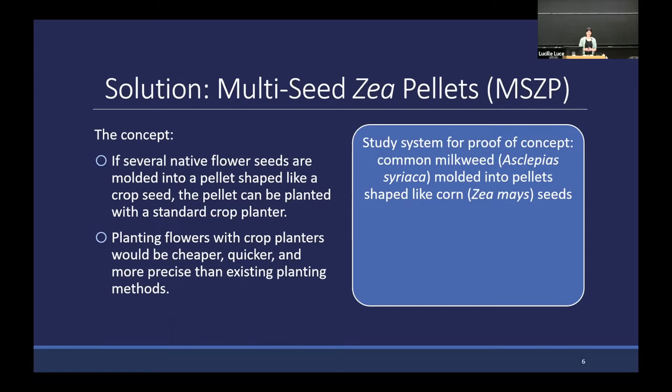We picked common milkweed because the disappearance of milkweed plants from agroecosystems, largely associated with the advent of herbicide-tolerant crops since the late 90s, is thought to be one of the major drivers of monarch butterfly decline over the same time period. Monarchs were just added to the IUCN endangered species list, so there's a unique opportunity to engage growers in the conservation of this gorgeous and iconic insect.